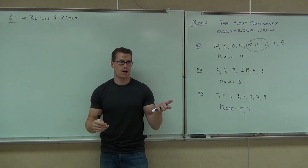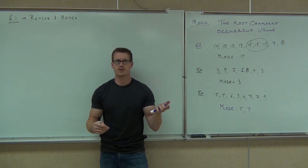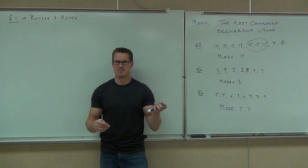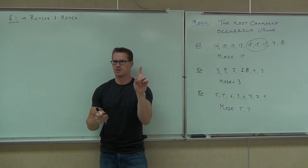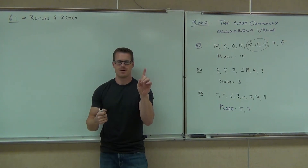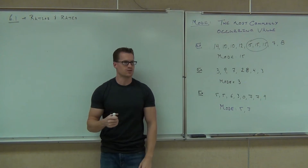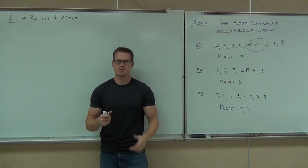If you get pulled over by a cop, what do you tell him? He asks you, how fast are you going? What do you say? Your speedometer — what does your speedometer say when he pulls you over? 75. 75 what? 75 miles per hour. Miles per hour. That's a rate, actually. You deal with those all the time.